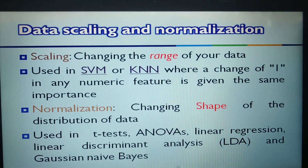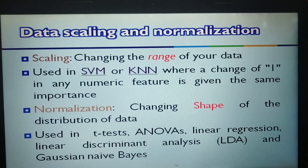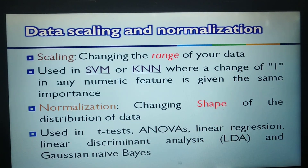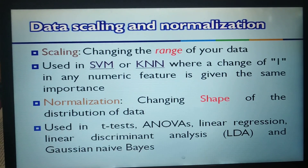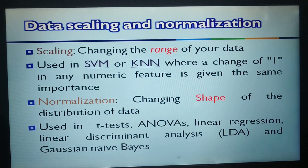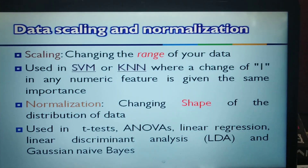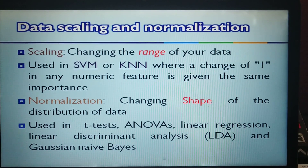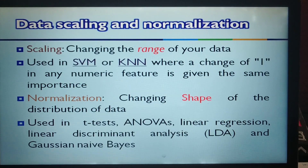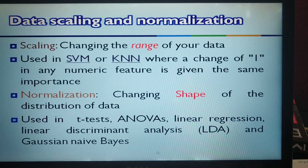So what is scaling? Scaling is changing the range of the data — converting a bigger range into a smaller range. We prefer scaling whenever algorithms are trying to calculate a distance between points, like SVM and KNN. In both cases we find out how far the points are located. So in such algorithms, scaling is generally used, and also when attributes have values with different units.